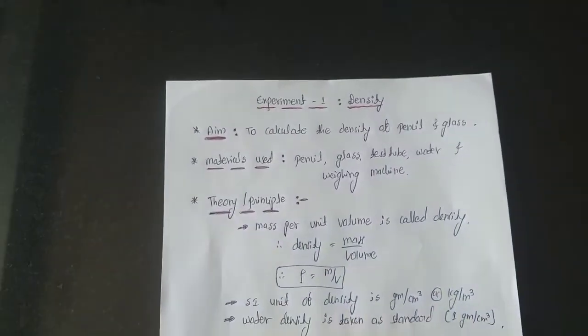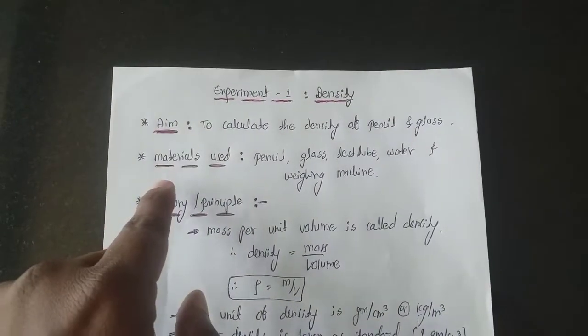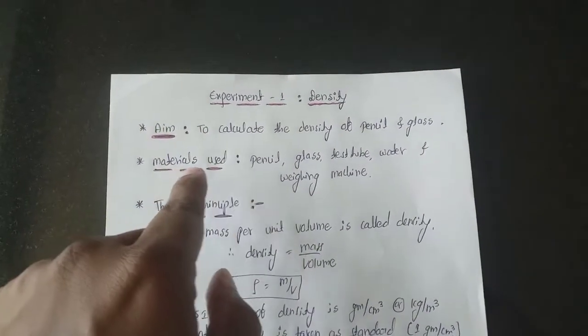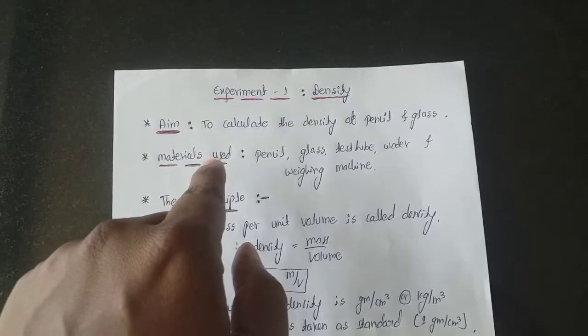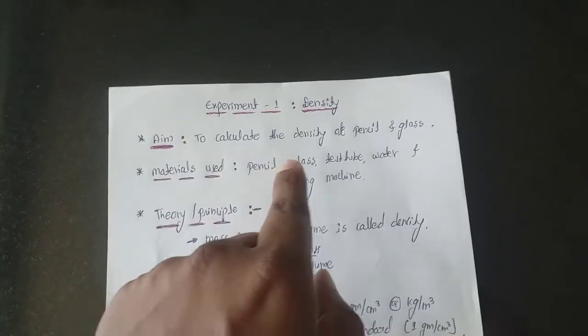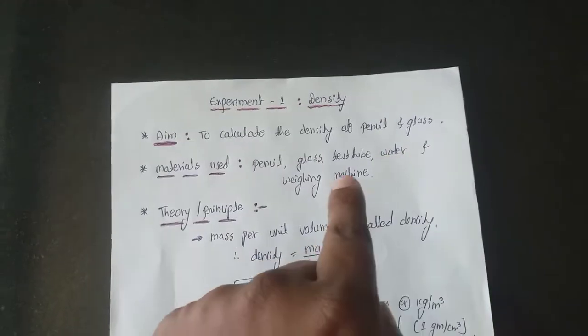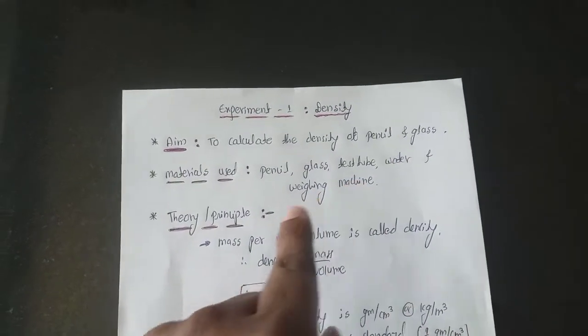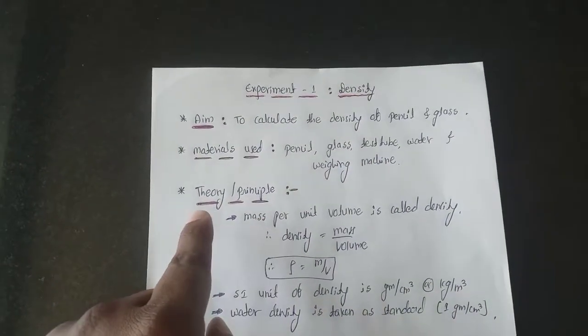Next you have to mention materials used or apparatus which you have used to perform the experiment. Here pencil, glass, test tube, water, and a weighing machine is used.